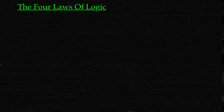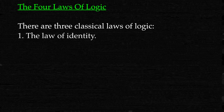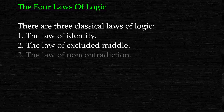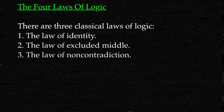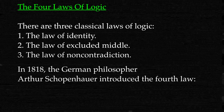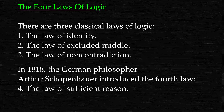Four laws of logic. There are three classical laws of logic: 1. The law of identity. 2. The law of excluded middle. 3. The law of non-contradiction. In 1818, the German philosopher Arthur Schopenhauer introduced the fourth law: 4. The law of sufficient reason.